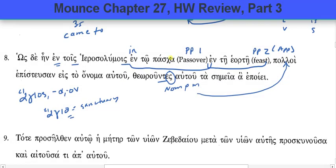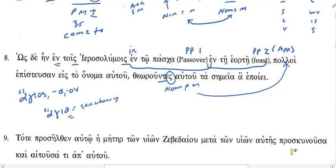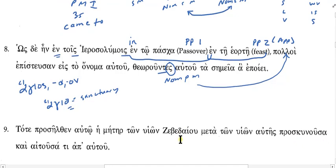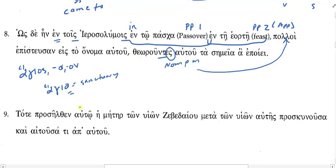Let's look at number nine and read the text. The Greek reads: pros elton — alto, hey mate, air tone, we own the bed — ayou, met a tone, we own, proscaine, news... pros kunusa kai aitousa. That's a good one, and it hits something important for us: matching the participle to the item in the main clause that matches its case, gender, and number. How do you translate the first part up to 'bad I you'? Give us your translation, Rachel.